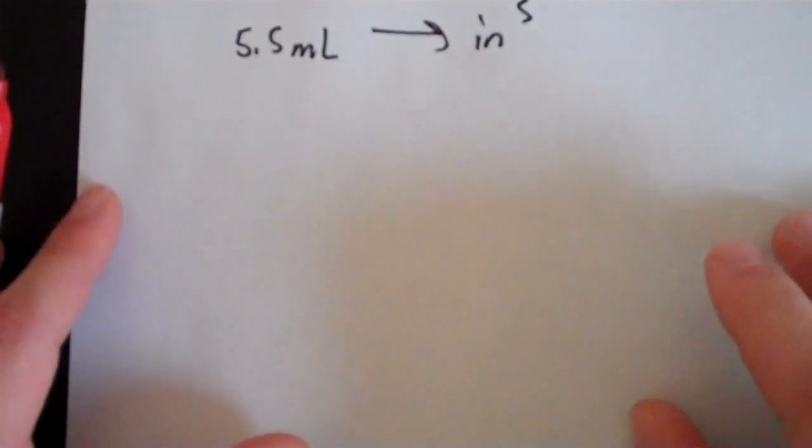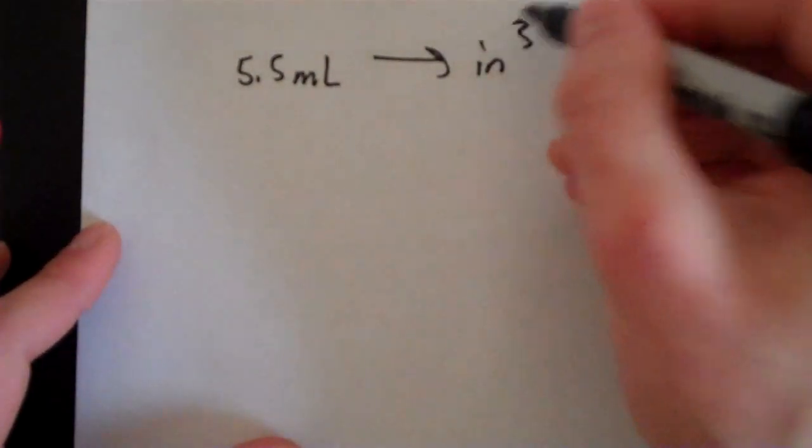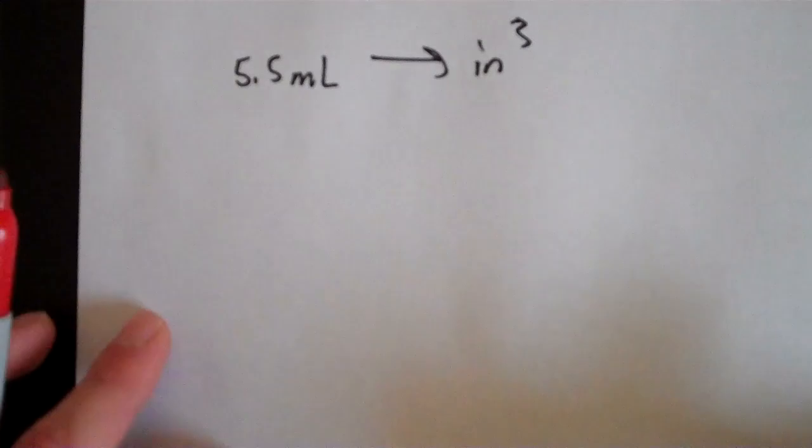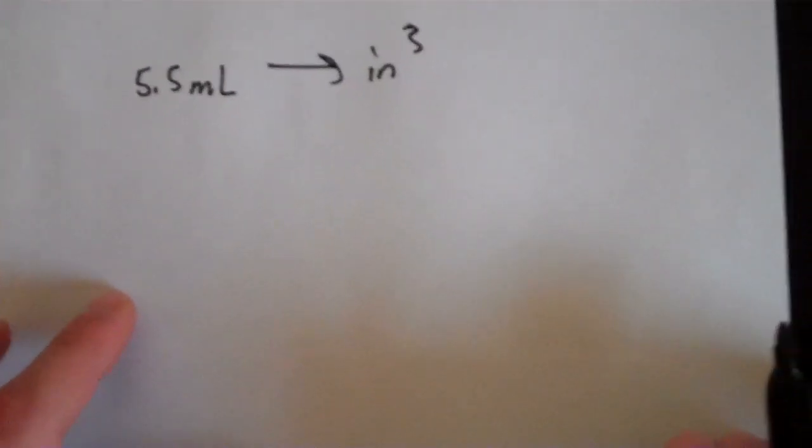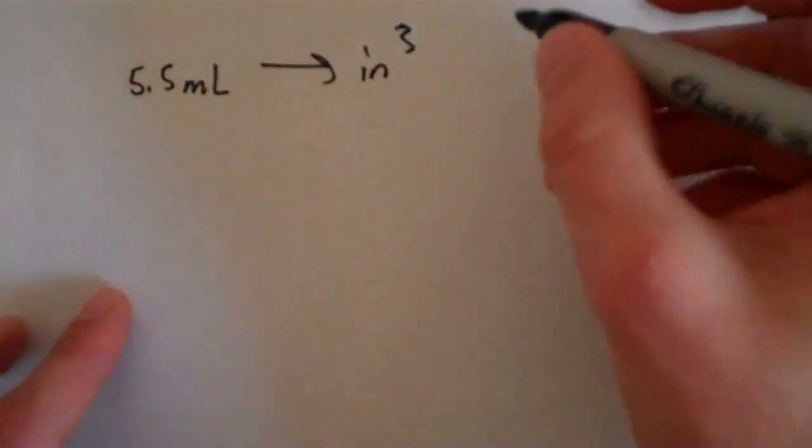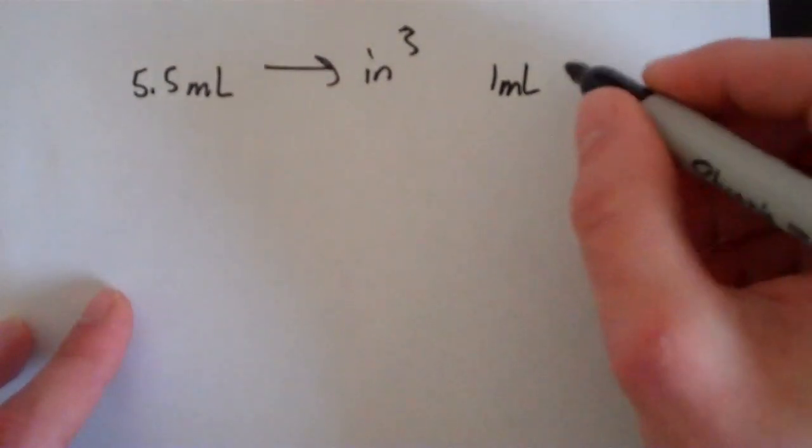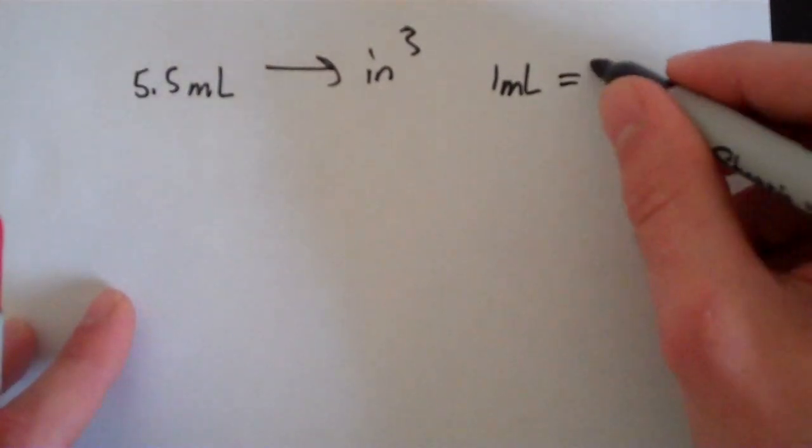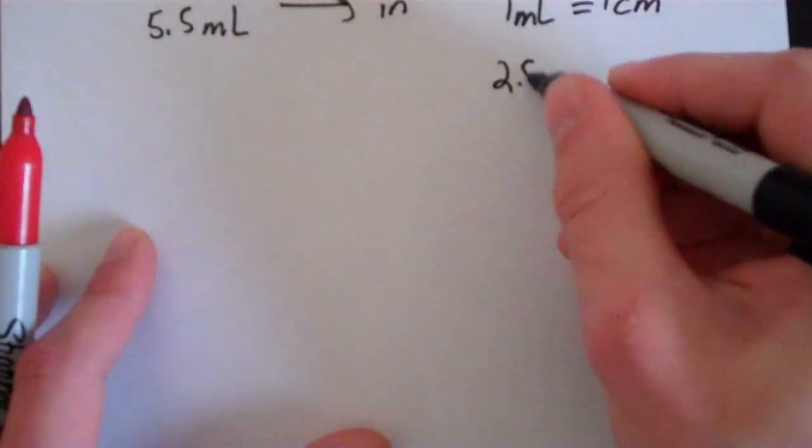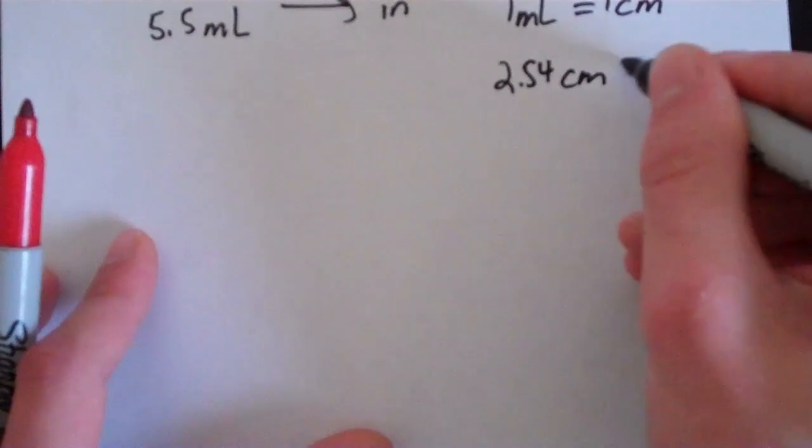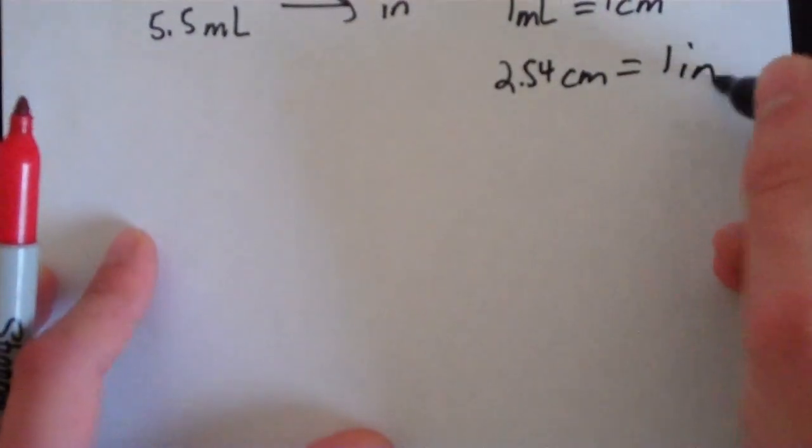Suppose we have 5.5 milliliters of something and we want to convert that into cubic inches. What do we do? Well, we need to know a couple of equations to start off with. We need to know first of all that 1 milliliter is equal to a cubic centimeter, and that 2.54 centimeters equals 1 inch.